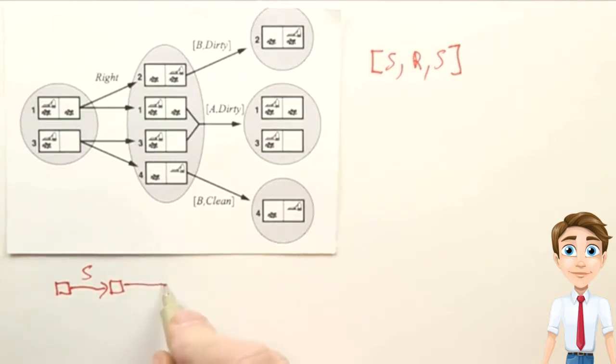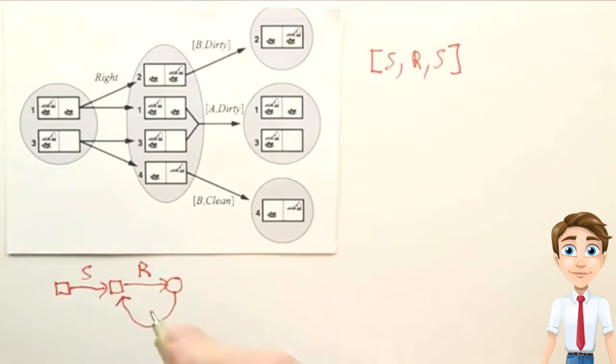And then we do a right action, and now we have to observe the world, and if we observe that we're still in state A, we loop back to this part of the plan.